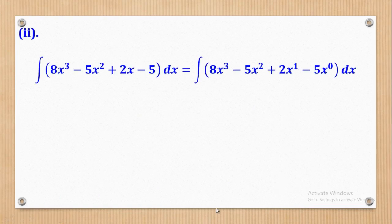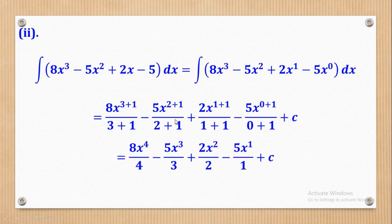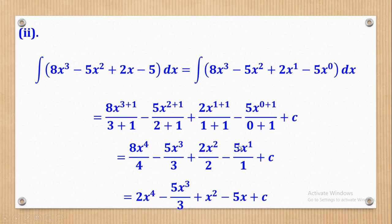Roman 2: integrate 8x cubed minus 5x squared plus 2x minus 5. There is a constant here, so add x power 0 on the constant term. Apply the rule — increase the power by 1 and divide by the new power — for each term, and don't forget the constant of integration. Simplifying: 8 over 4 gives 2, giving 2x to the fourth; 2 over 2 gives 1, giving x squared; and the constant term gives 5x. Don't forget C.